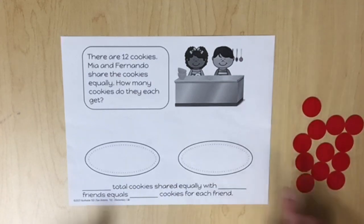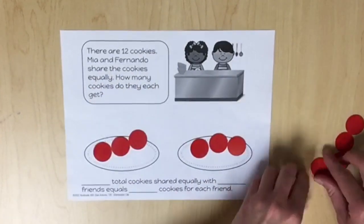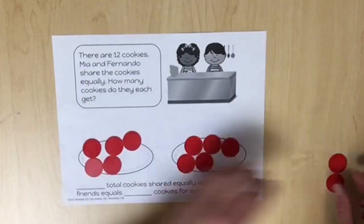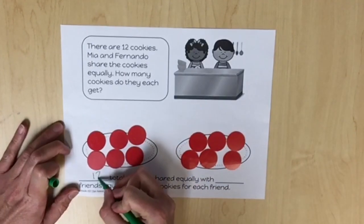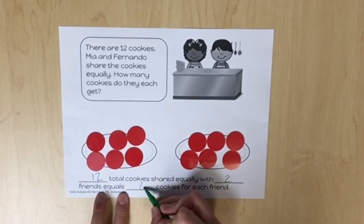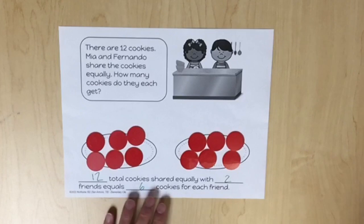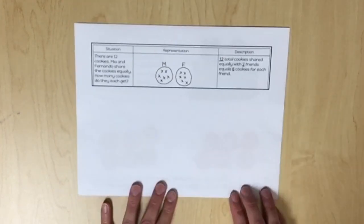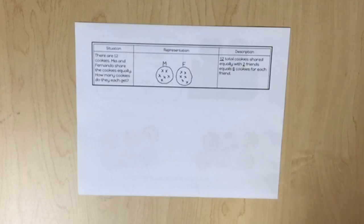Students should use counters to model sharing the cookies between the two friends. We have 12 counters representing two friends. Each friend can get six cookies — 12 total cookies shared equally with two friends equals six cookies for each friend. Students should then create a representation of the cookies that were shared equally and discuss the relationship between joining equal groups and sharing a set equally.